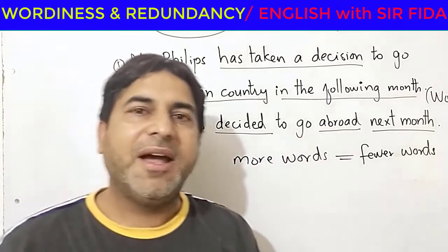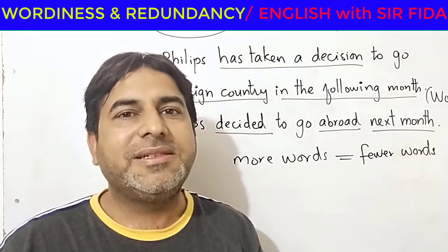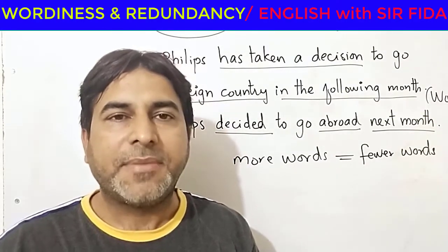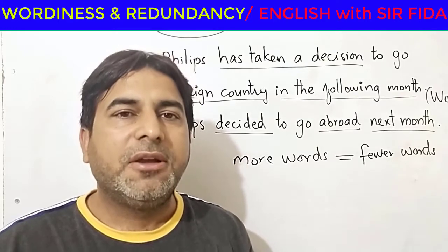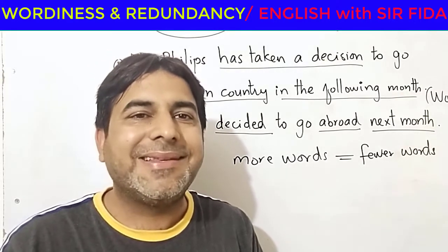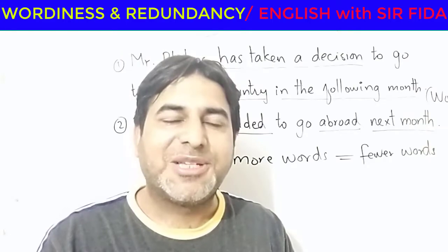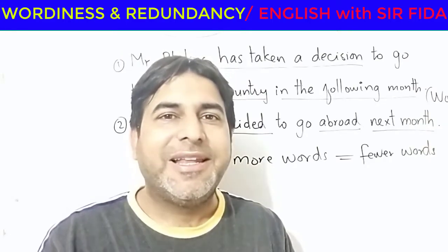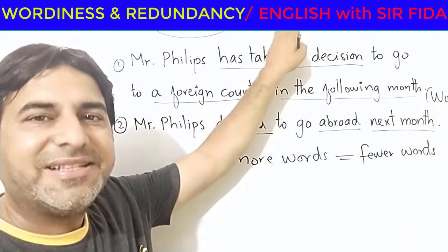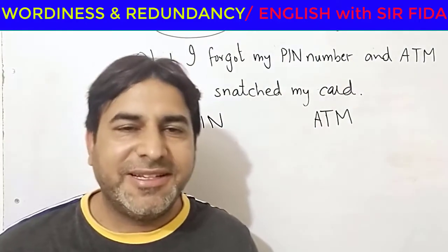We can define wordiness as a style of speaking in which we use more words to convey our idea, whereas preciseness means using fewer words. So let's move on to the next point, which is redundancy.